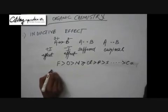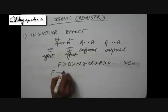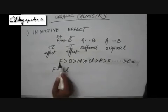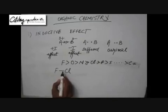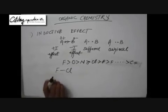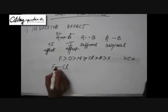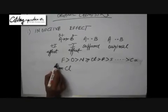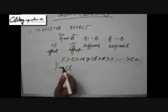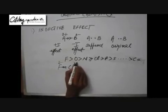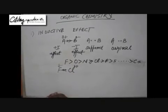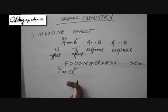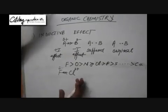Suppose there is a bond between Fluorine and Chlorine. From the electronegativity order, Chlorine is less electronegative than Fluorine, so Fluorine is the relatively more electronegative atom. Fluorine will pull up the electron density in the sigma bond — negative charge polarity develops on Fluorine and positive charge polarity develops on Chlorine. This is how you identify which group operates minus I and which operates plus I.